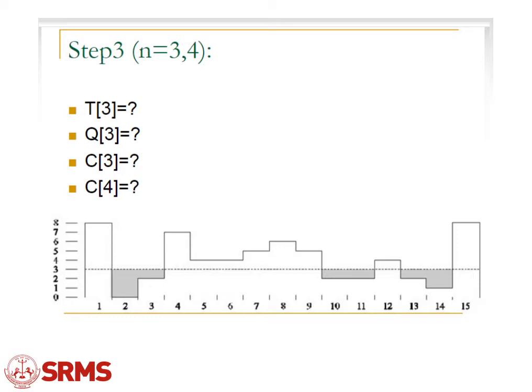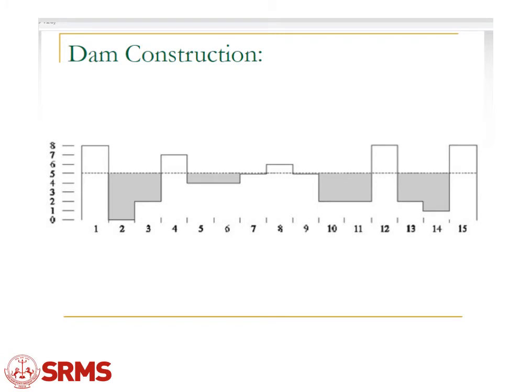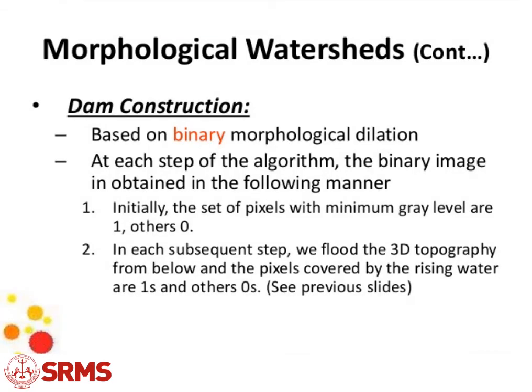For c3 and c4 we have constant values respectively. At step c4 we have values n3 and 4. For n equal to 5 we have t5 down to level 5, q5 at the next level, and c5 again at the constant value of c3. This is the final construction of the dam for a certain image ranging from 1 to 15, with maximum values of 5. Morphological watershed describes dam construction based on binary morphological dilation.